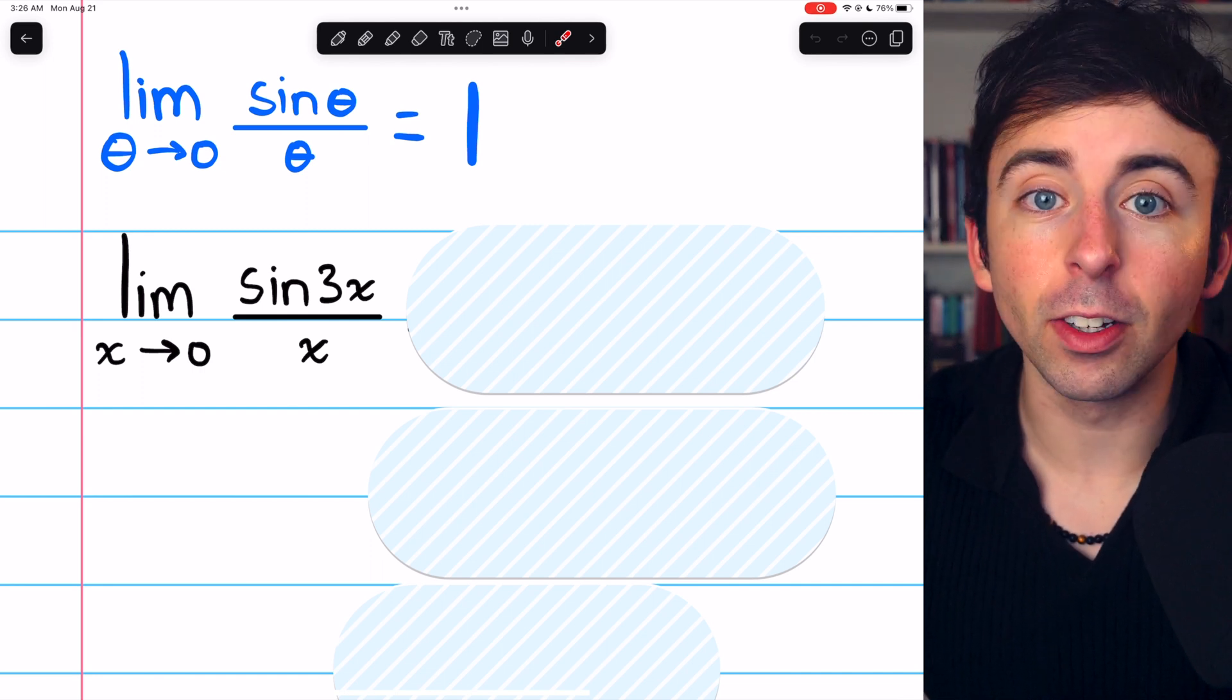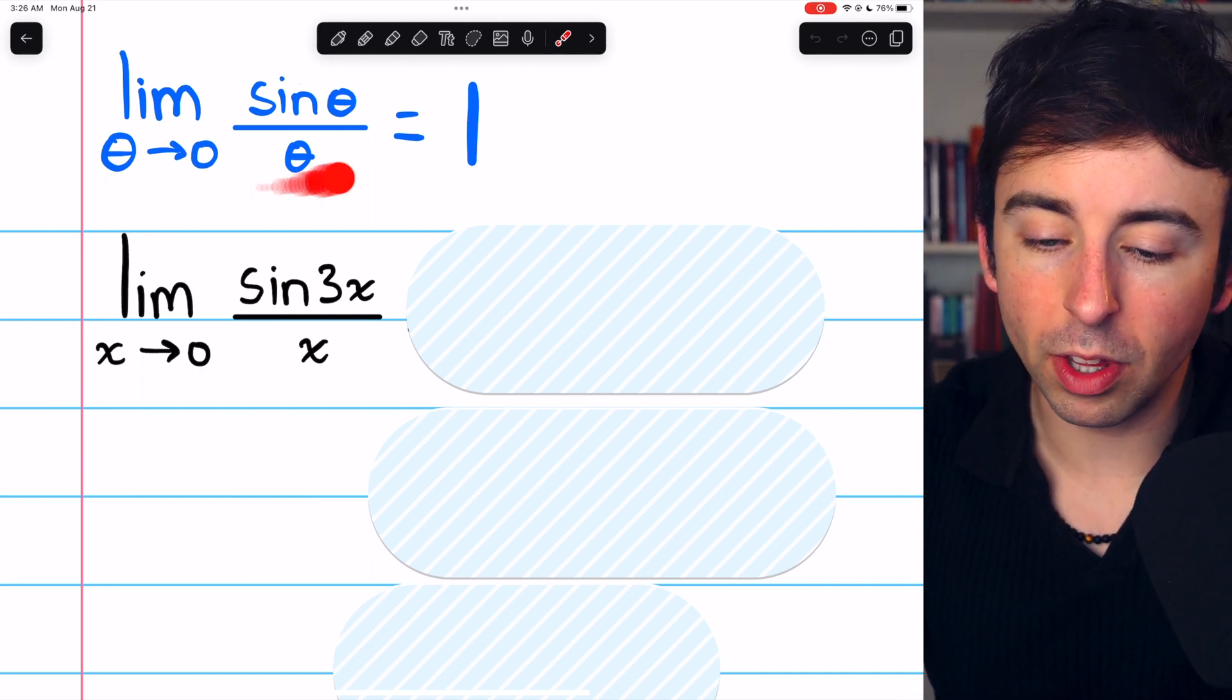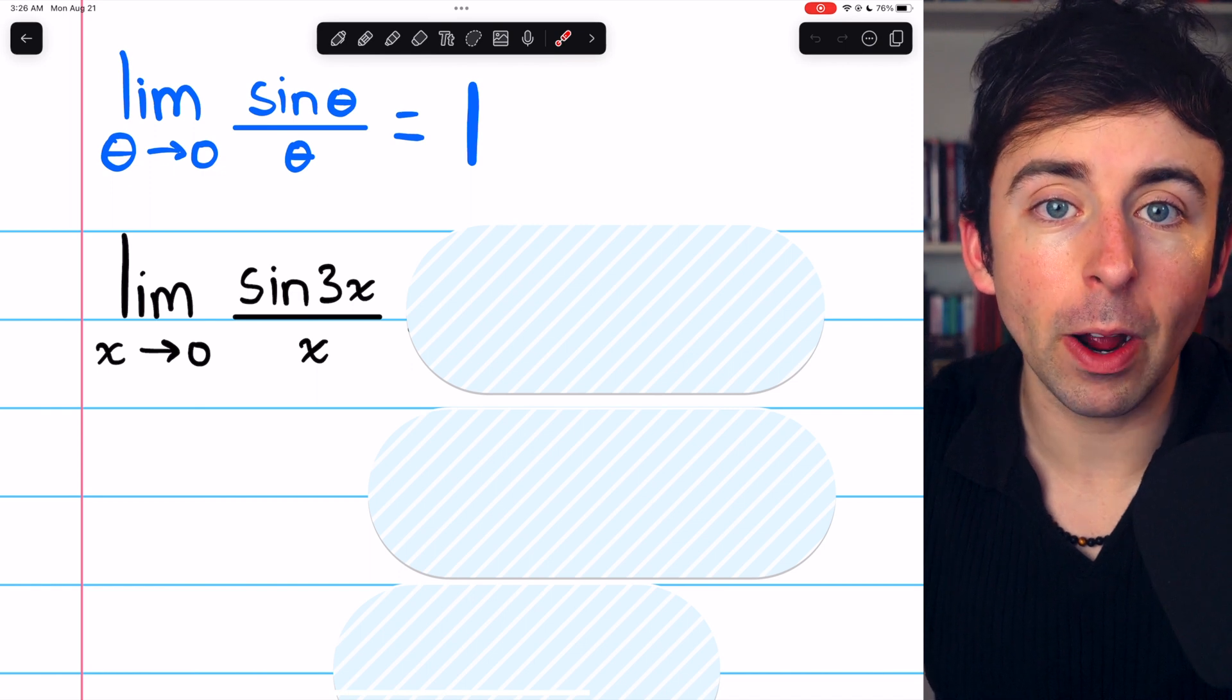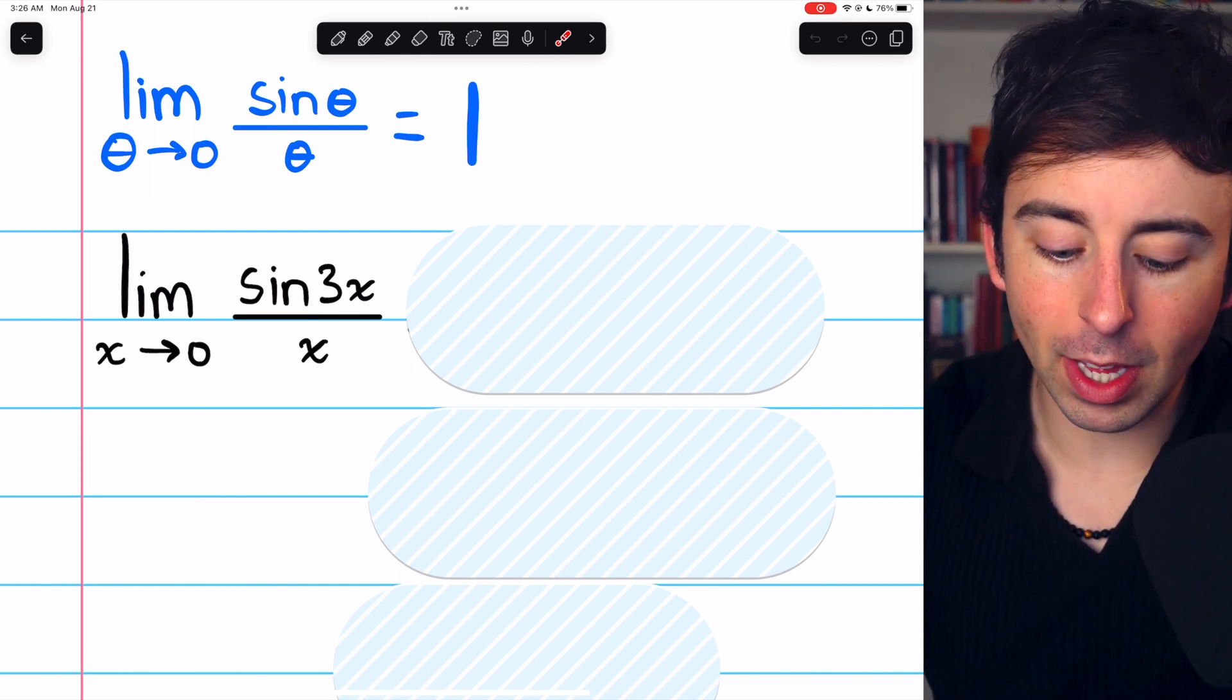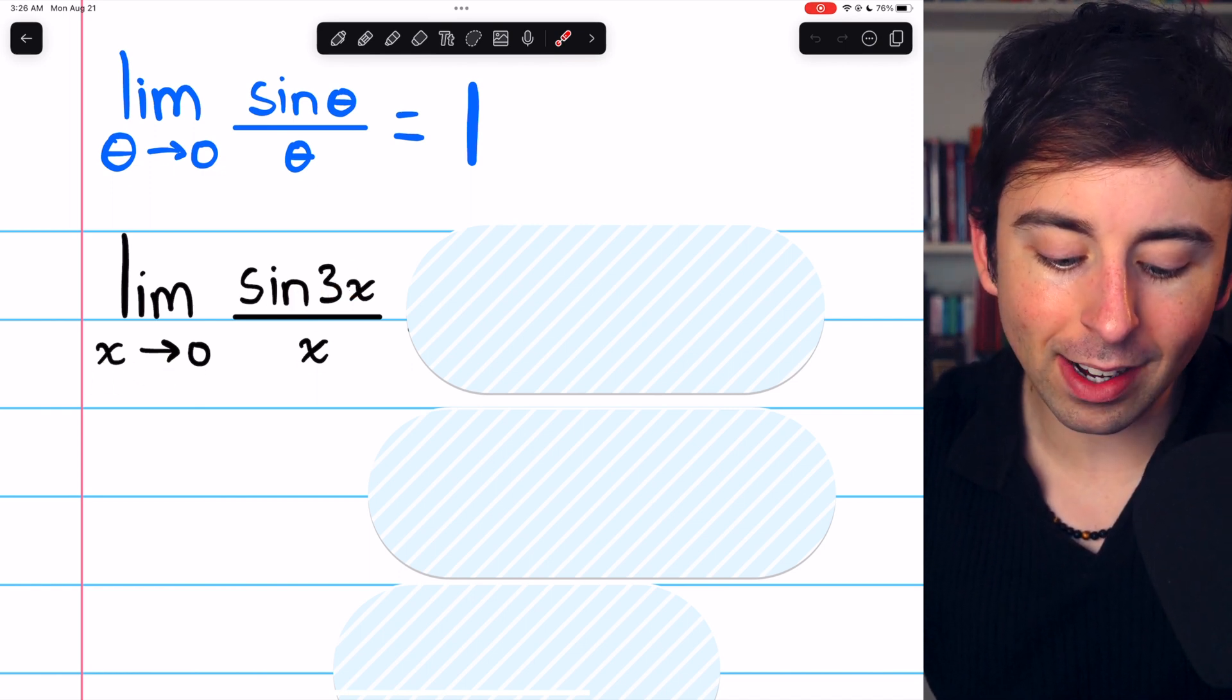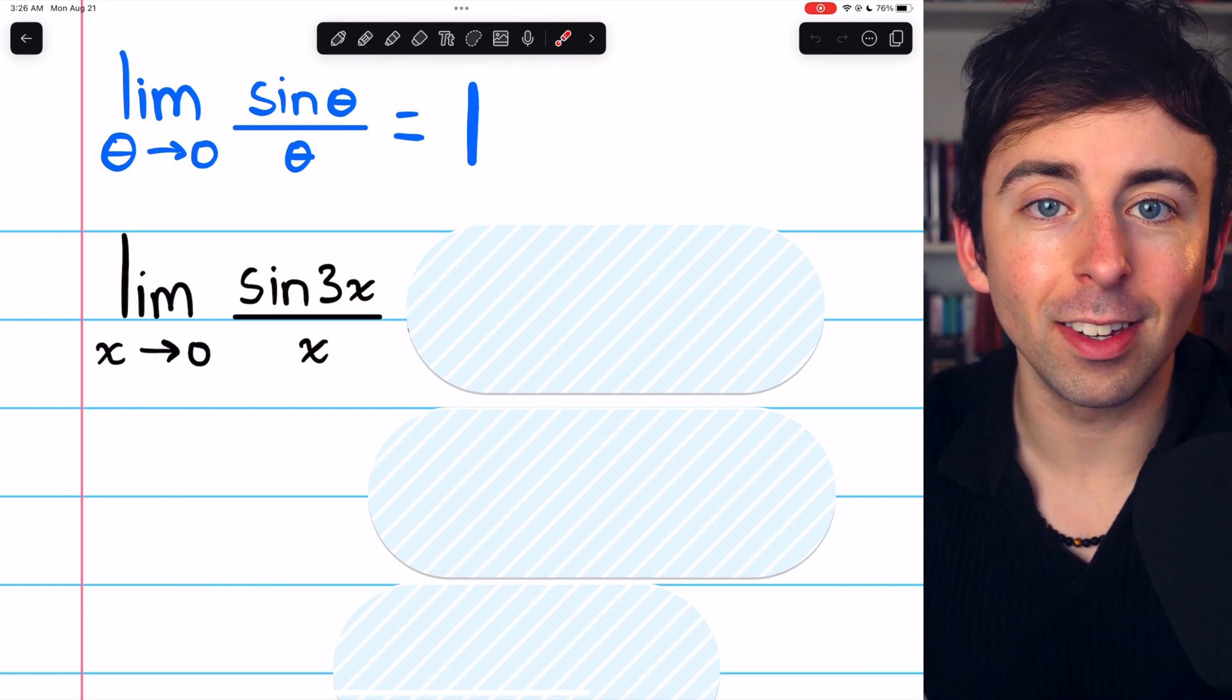There are many other limits that look similar that once we know this one, we can also figure out. One example is the limit of sine of 3x over x as x approaches 0.